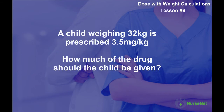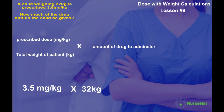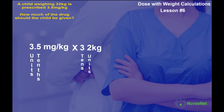Let's do another. A child weighing 32 kilograms is prescribed 3.5 milligrams of the drug per kilogram. How much should we give the child? Using our formula of prescribed dose per kilogram multiplied by total patient weight, we input the figures: 3.5 milligrams per kilogram multiplied by 32 kilograms. Looking at place value, 3.5 has a 3 in the units column and 0.5 in the tenths column; 32 has a 3 in the tens column and a 2 in the units column. Let's draw this out as a grid with weight along the top and dosage down the side.